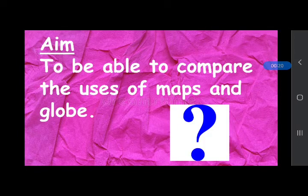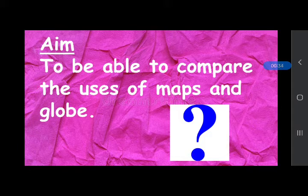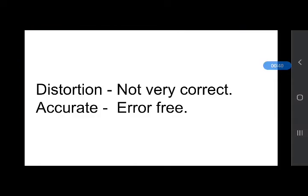Our aim for today is to be able to compare the uses of maps and a globe. We will learn to differentiate between maps and globe — how they are different and what are their uses. Here are some keywords from this block: distortion means details that are not very correct, and accurate means correct and error free.